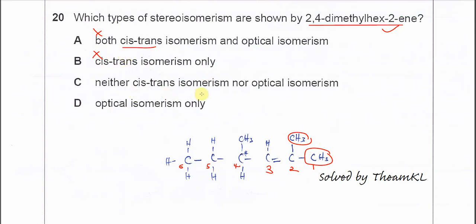Neither cis-trans nor optical. This one, it will form optical because there is a chiral carbon. This carbon, the fourth carbon, it has one, two, three, four groups. So it's a chiral carbon, it can form optical isomerism. So C is wrong.